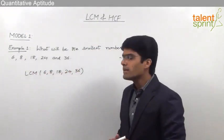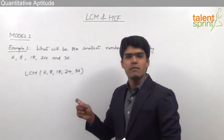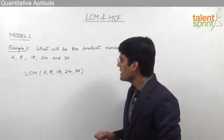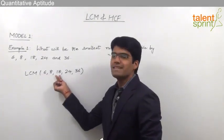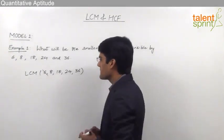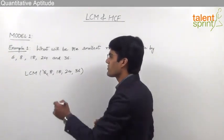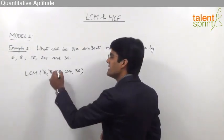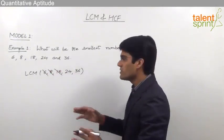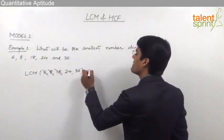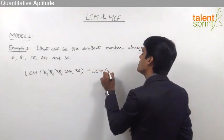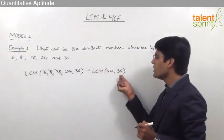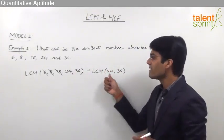As we have already learned, whenever from the given numbers there is a number which is a factor of some other number, then it can be struck off from the calculation. Here, 6 is a factor of 18, so it can be cancelled. Similarly, 8 is a factor of 24, so 8 can be cancelled. And 18 is a factor of 36, so 18 can also be cancelled out.